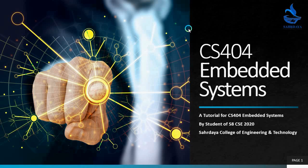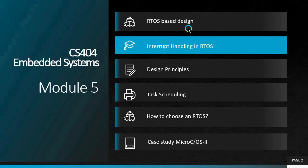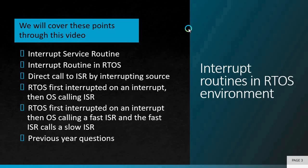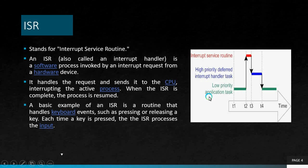Welcome to this video tutorial on embedded systems. These are the important topics in module 5. I am going to handle the topic: interrupt handling in RTOS. The important subtopics include interrupt service routine, interrupt routine in RTOS, direct call to an ISR by an interrupting source, RTOS first interrupted then OS calling ISR, RTOS first interrupted then OS calling a fast ISR, and the fast ISR calling a slow ISR. We will also discuss some previous year questions.